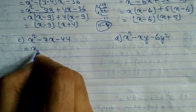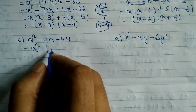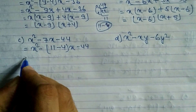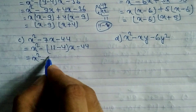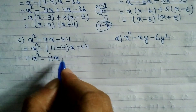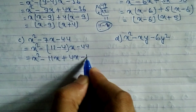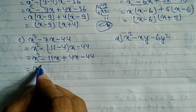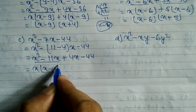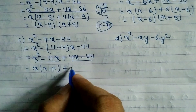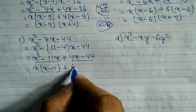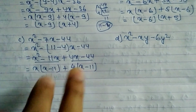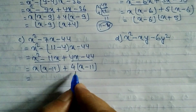So we rewrite x² - 11x - 4x - 44. Opening the bracket: x² - 11x + 4x - 44. From the first two terms, x is common: x(x - 11). From the last two terms, 4 is common: 4(x - 11).